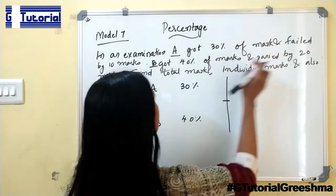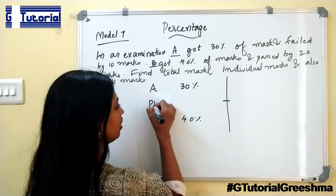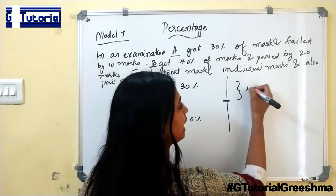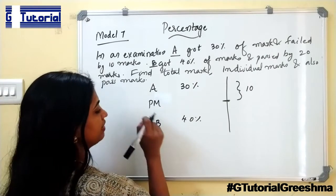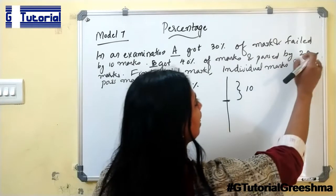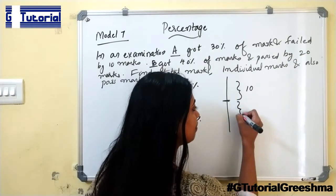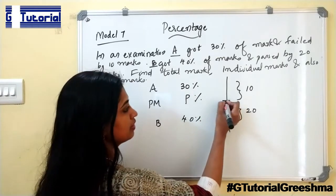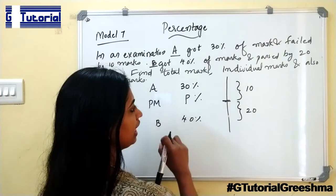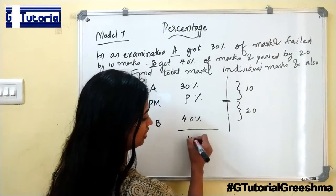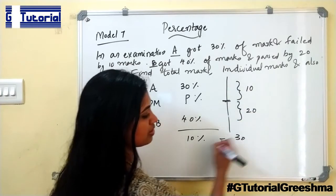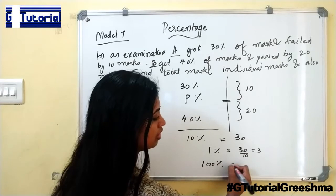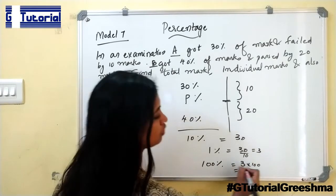A got 30% of the marks and failed by 10 marks. That is, he got 10 marks less than the pass mark. And B got 40% and he passed by 20 marks, so B got 20 marks more than the pass mark. The difference between 30 and 40 is 10 percentage, which is equal to the difference in marks, 30 marks. So 1 percentage is equal to 30 divided by 10, which is 3. So 100 percentage is 3 into 100, that is 300. That is the total marks.